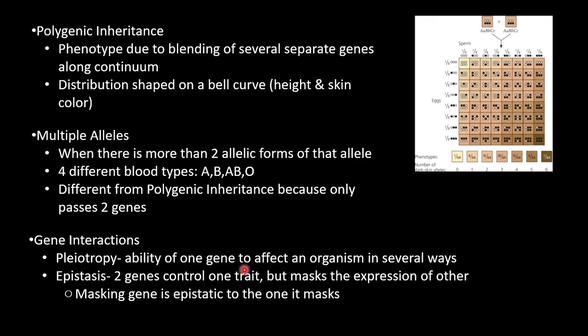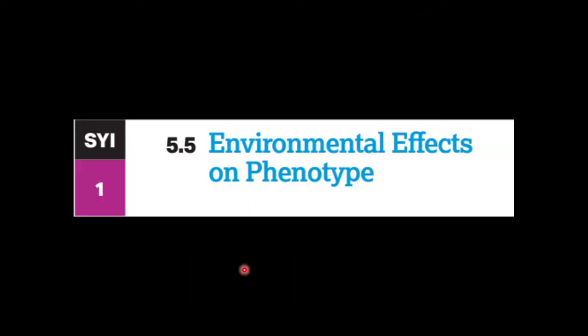Last is gene interactions, basically how genes can interact if they both are present. Pleiotropy is the ability of one gene to affect an organism in several ways, like one gene controls eye and hair color. Epistasis is when two genes control one trait but mask the expression of the other. The masking gene is epistatic to the one it masks.